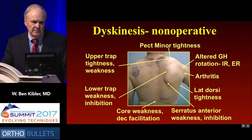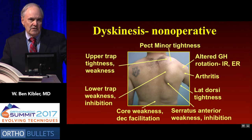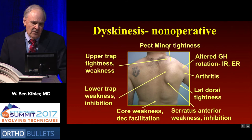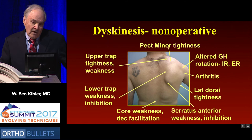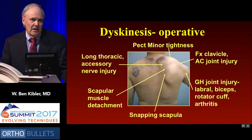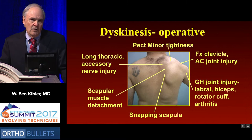There are two checklists of reasons for dyskinesis. Non-operative causes include pec minor tightness, altered rotation, arthritis, latissimus dorsi tightness, serratus anterior weakness, core weakness, low trap weakness, and upper trap tightness. Operative causes include fractured clavicle, AC joint problems, glenohumeral joint injury — sometimes you can't improve them until you fix the intra-articular problem — snapping scapula, scapular muscle detachment which is an avulsion of the muscles, and nerve injuries. You go through the checklist and rule those in or out.